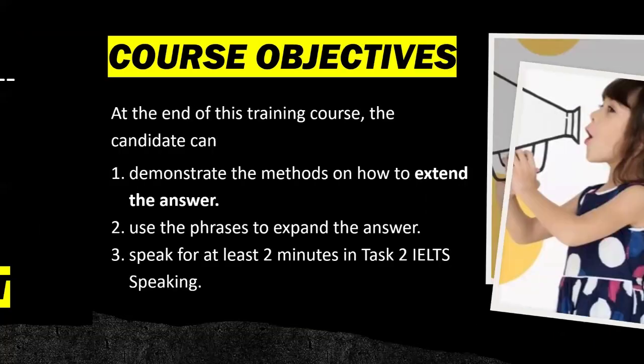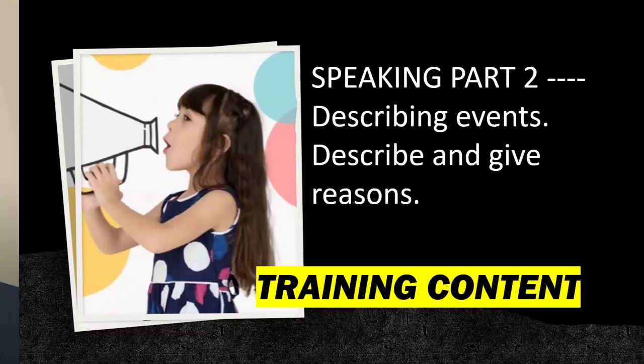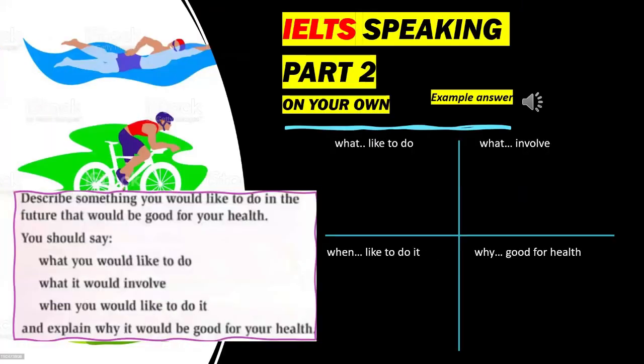For the third type — describing events — the question is: describe something you would like to do in the future that would be good for your health. You should say what you would like to do, what it would involve, when you would like to do it, and explain why it would be good for your health. In this type, you are not asked to describe steps or stages in a story — you simply describe the event. Let's listen to the example answer.